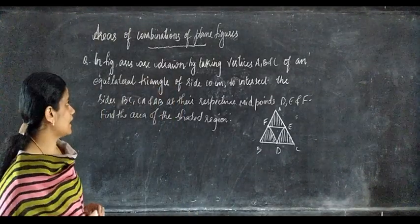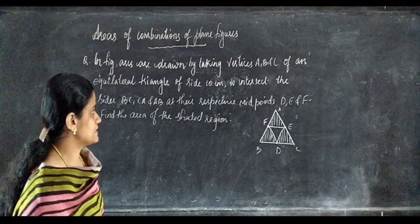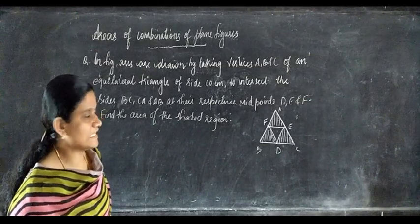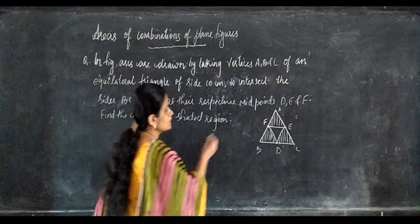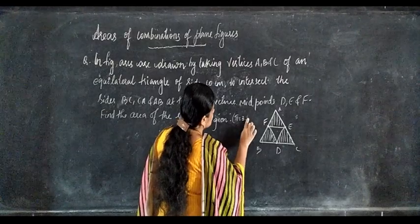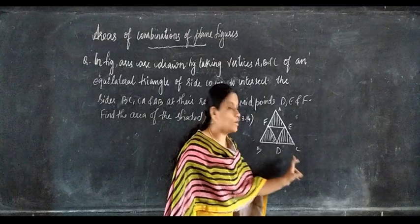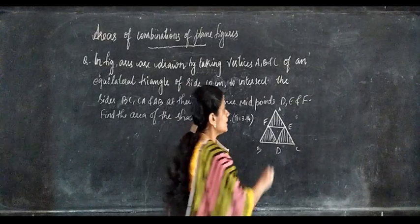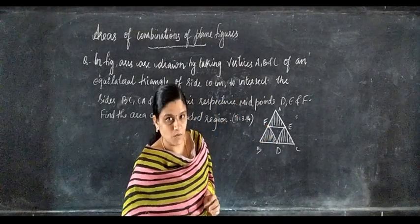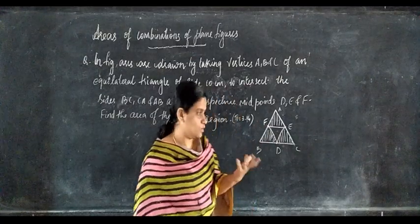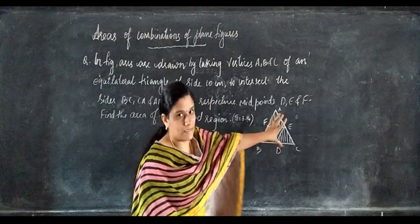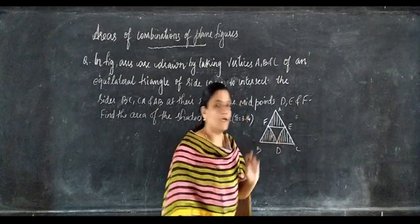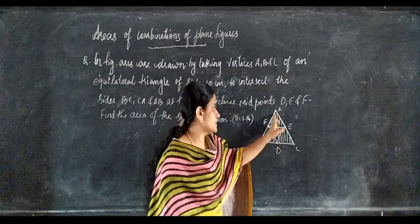Next question: arcs are drawn by taking vertices A, B, and C of an equilateral triangle of side 10 centimeters to intersect the sides BC, CA, and AB at their respective midpoints D, E, and F. Find the area of the shaded region, given π equals 3.14. Since D, E, F are midpoints, BF equals 5 cm, and each angle of the equilateral triangle is 60 degrees.